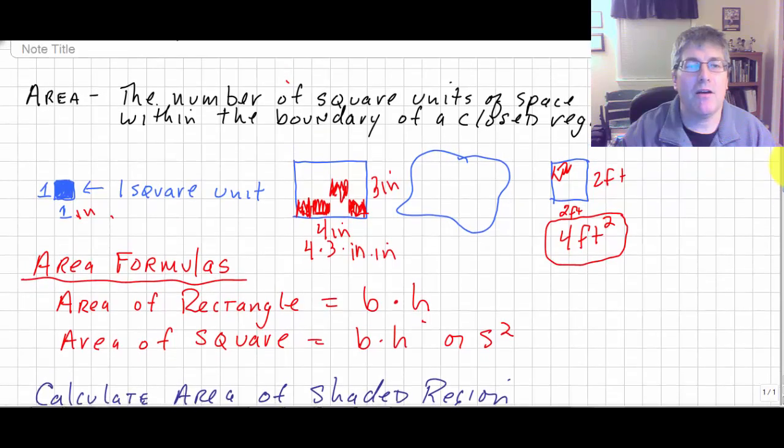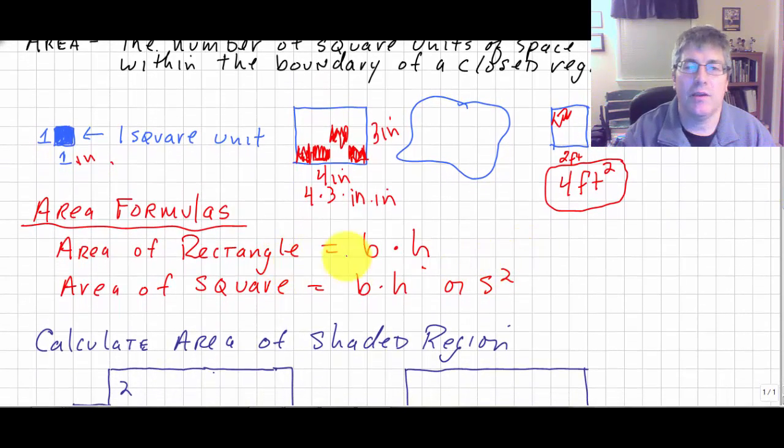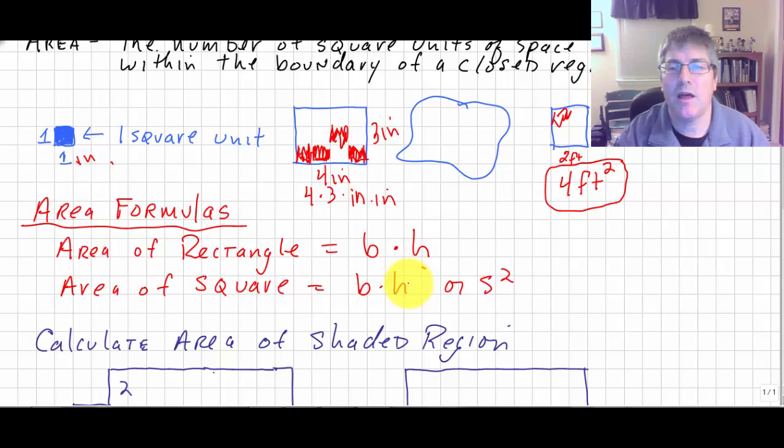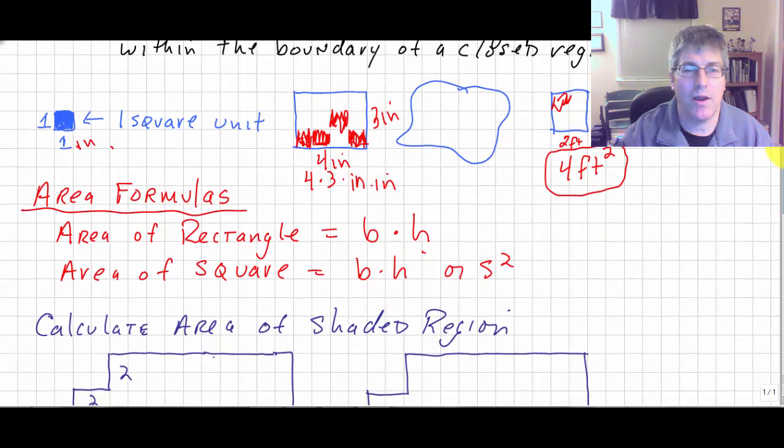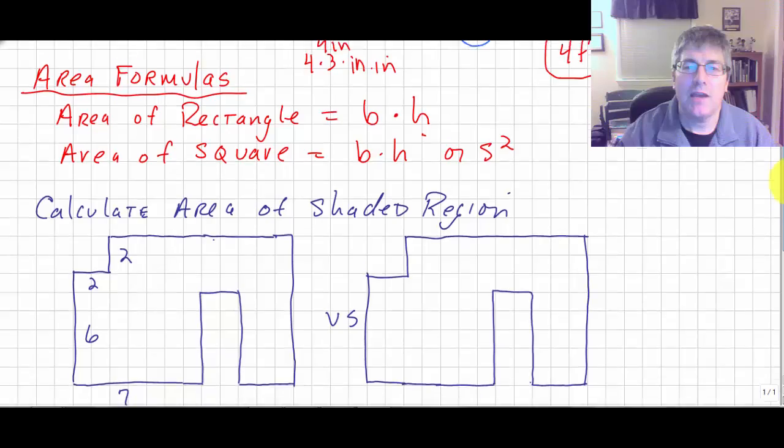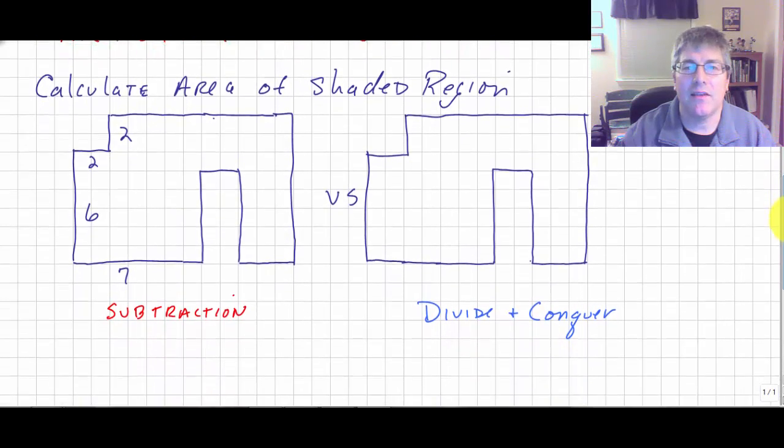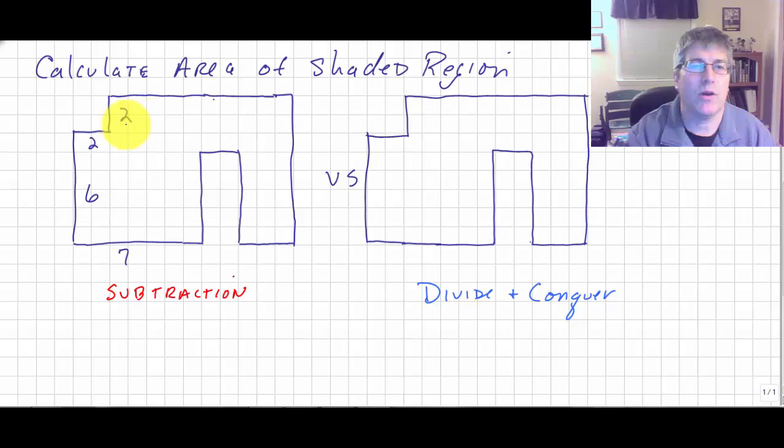So we have some area formulas for you in this section. The area of a rectangle: the base times the height or the length times the width. And the area of a square, same formula: base times height or side squared because both the sides are the same in a square. And you might get something like this as part of your class work. Since every enclosed region has an area, I might ask you to calculate the area of the shaded region. And there's a couple of ways to do this.